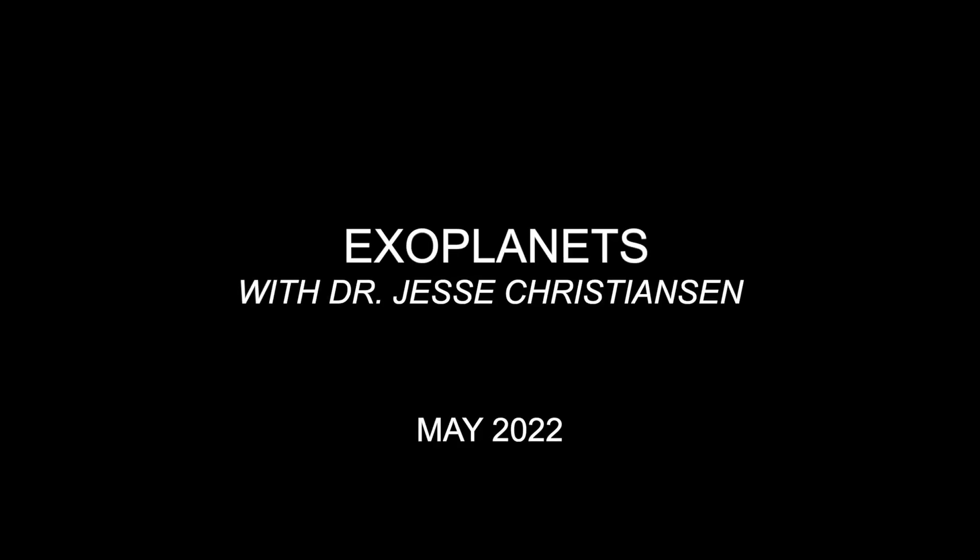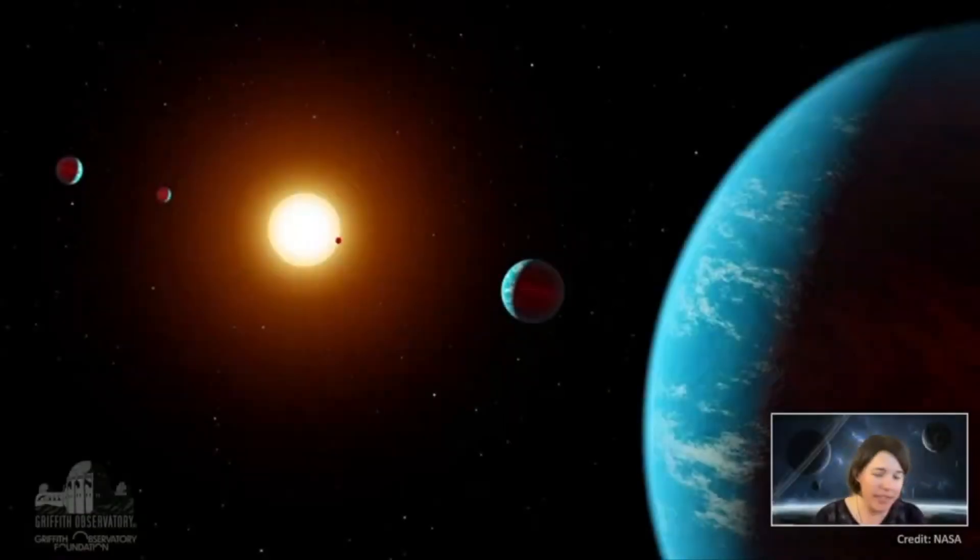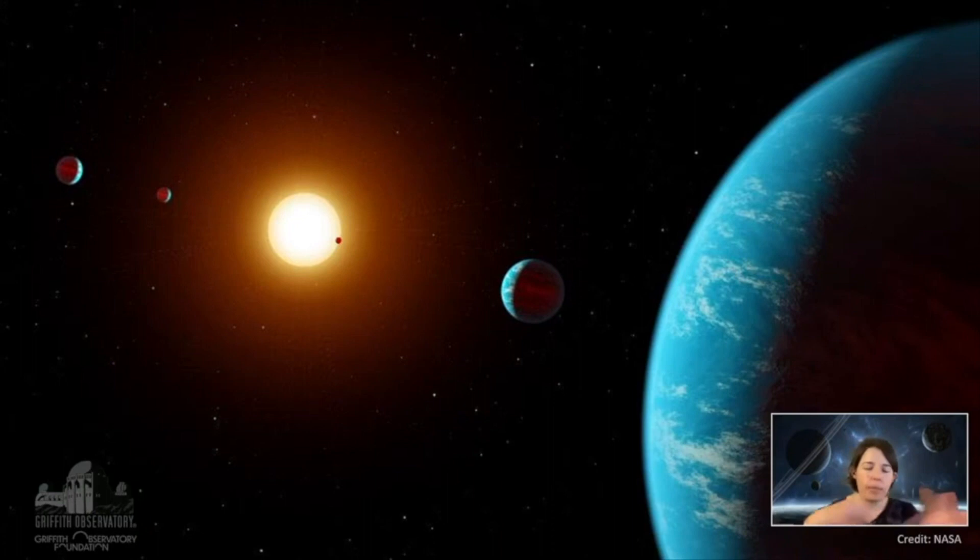One of the things we found that isn't Earth-like but is super interesting is planets in resonance systems. Resonances are where the orbital periods of the objects are related to each other with very simple mathematics, like one is two times the other. This is a system I really love called K2-138. It has six planets around it and they were all found by citizen scientists.